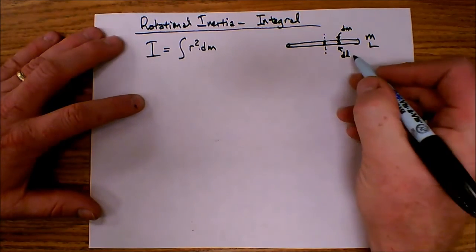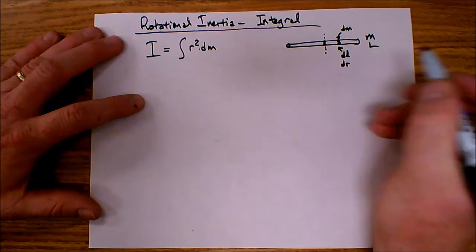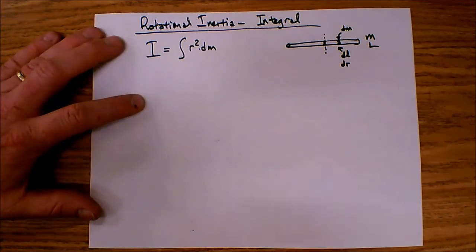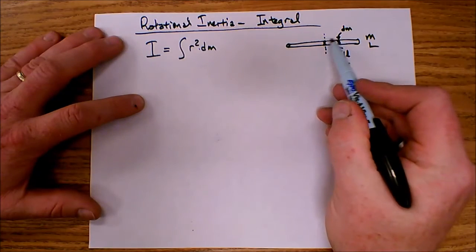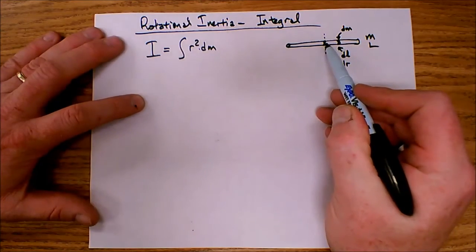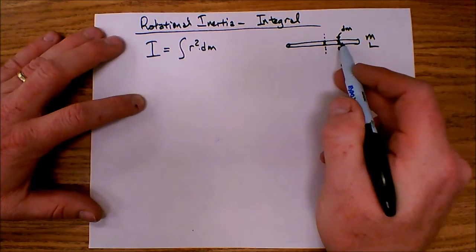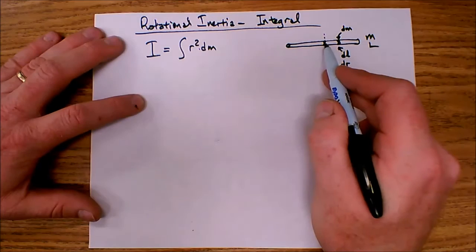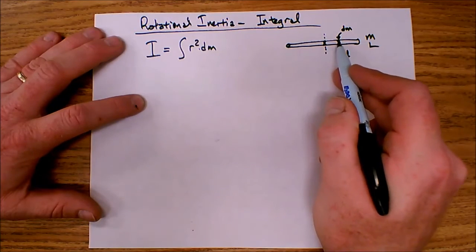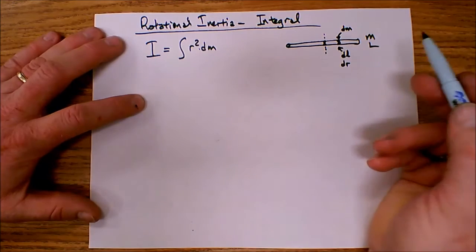Or I can use any linear position variable like dr to represent the thickness of that slice. And it's located a certain distance away from the axis of rotation. So what I need to do is slice this thing into little pieces and then take the r-squared times the mass of each little piece and add them up.